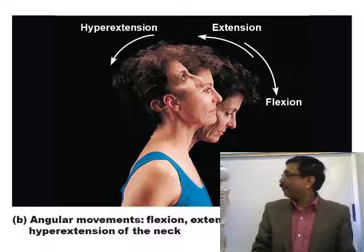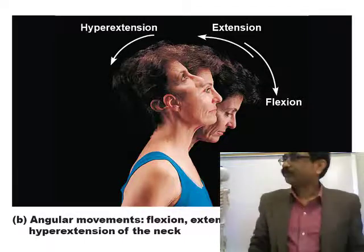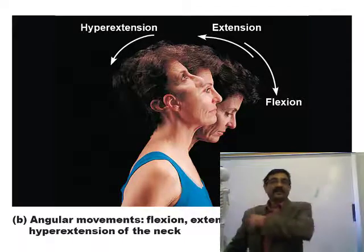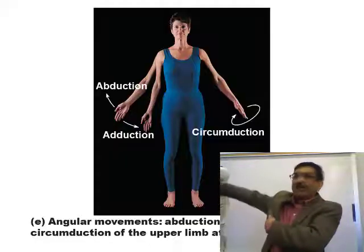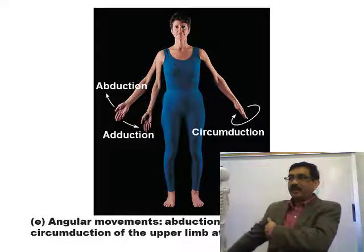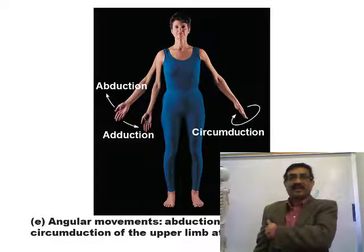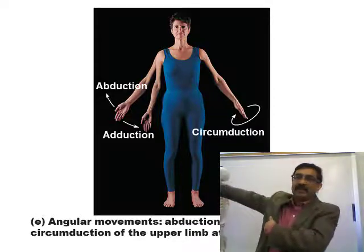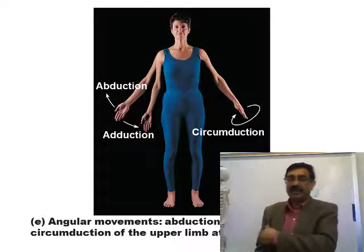Abduction is moving the arm away from the trunk sideways — the angle gets bigger laterally. Adduction is bringing it back towards the trunk. Similarly, abduction and adduction of the thigh occur at the hip joint.